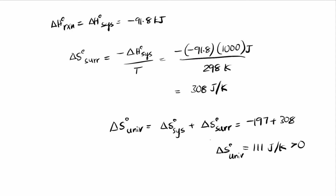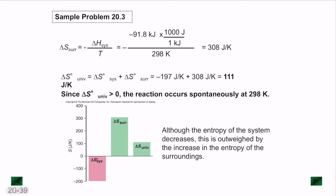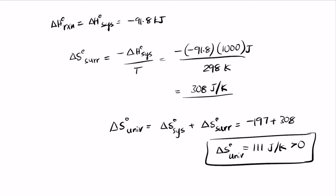When delta S of the universe is greater than 0, the process is spontaneous. So even though delta S of the system is less than 0, delta S of the surroundings has managed to go beyond the system value to make sure the total effect is still positive.